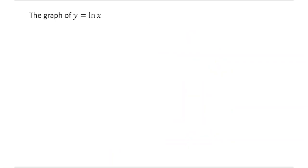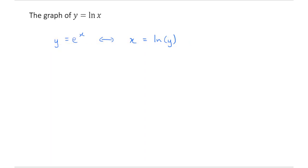So what would the graph of ln x look like? Well, what is ln x? We start with y equals e to the x, then rearrange into logarithmic form and get x equals ln y. This means these two things are inverse functions — the logarithmic form is the inverse of the exponential form. So if f(x) equals e to the x, then f inverse of x equals ln x. If we already know what the graph of e to the x looks like, we can work out what the inverse function looks like.